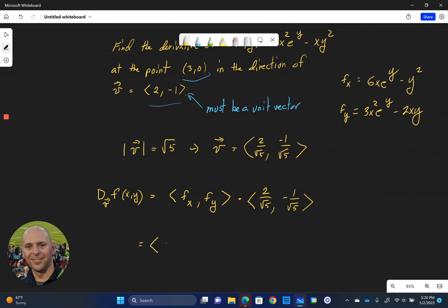So here we're going to have 6x e to the y minus y squared, and the partial with respect to y, 3x squared e to the y minus 2xy. And again, we're going to dot that with our directional vector, 2 over root 5 and negative 1 over root 5.